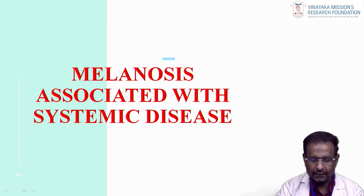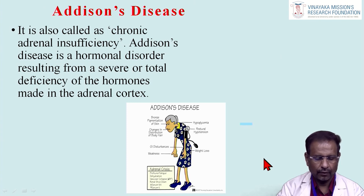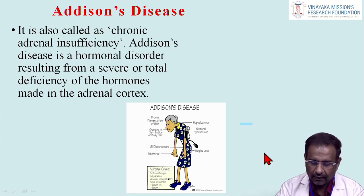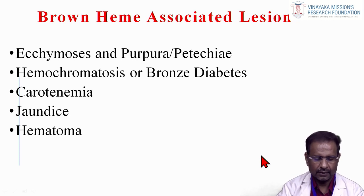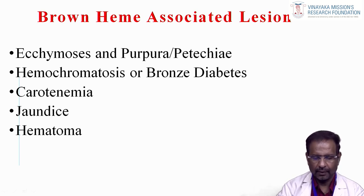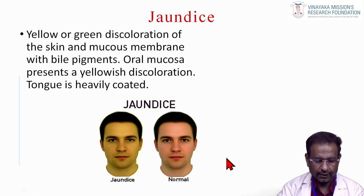Melanosis associated with systemic diseases: Addison's disease, also called chronic adrenal insufficiency, is a hormonal disorder resulting from severe or total deficiency of hormones made in the adrenal cortex — it creates pigmentation. Brown heme-associated lesions include ecchymosis, purpura, petechiae, hemochromatosis, carotenemia, jaundice, and hematoma. Jaundice causes yellow or greenish discoloration of the skin and mucous membranes; the oral mucosa shows yellowish discoloration and the tongue is heavily coated.